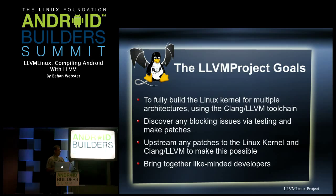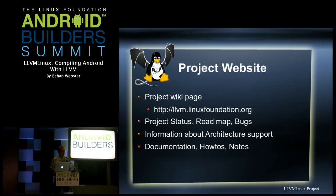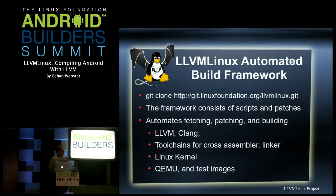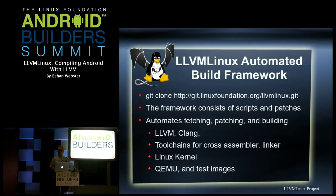We tried to concentrate all the different people and organizations working on this, bringing them together to get work done faster. There's a wiki page with information about bugs, roadmap, project status, documentation, and how to build things. We've also got a git repo — bear in mind we don't maintain our own versions of the Linux kernel and LLVM; we maintain patches and an automated toolkit. You type 'make' and it downloads patches, installs LLVM and Clang, downloads necessary toolchains, the Linux kernel code, QEMU, and a bunch of test tools.